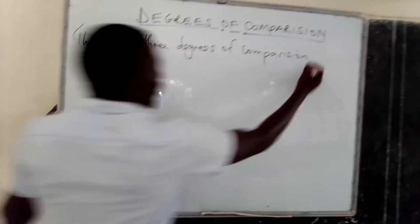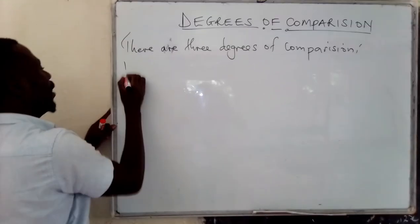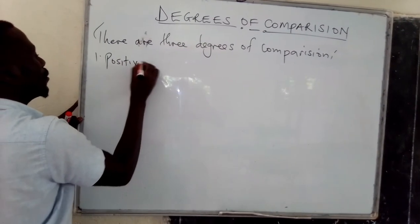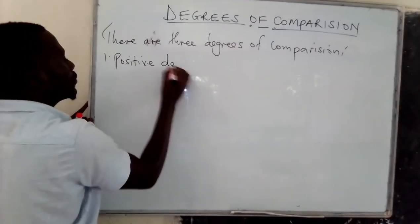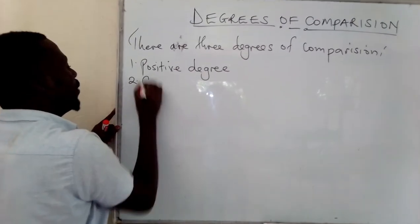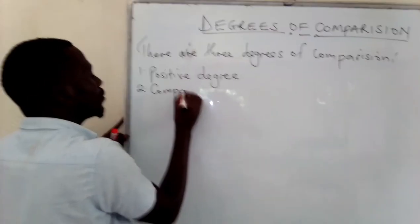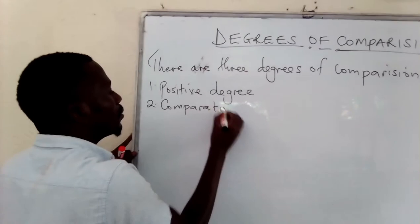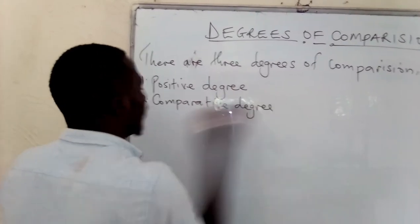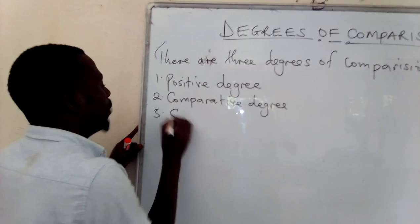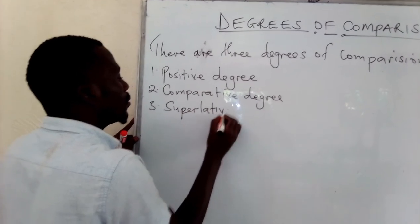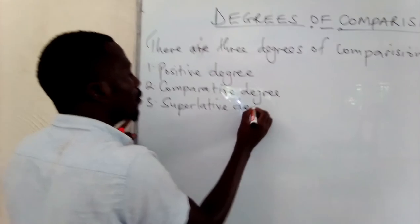And these are: we have the positive degree, then we have the comparative degree, and then the superlative degree.